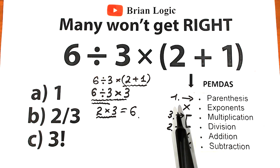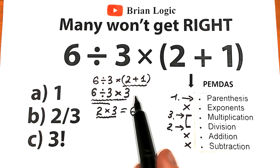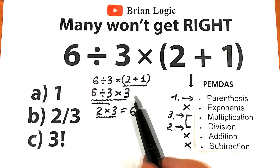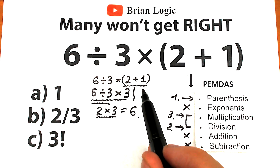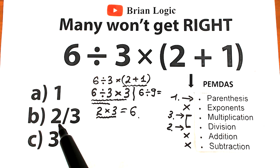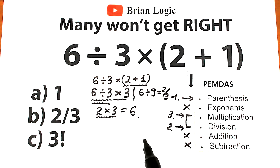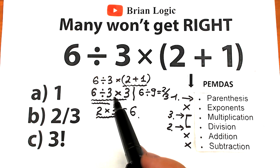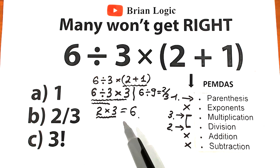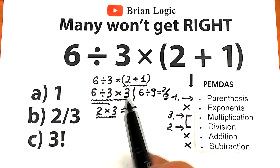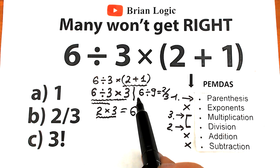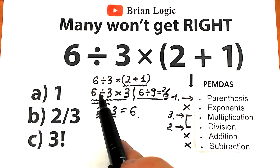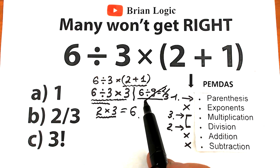A lot of students are confused because 6 is not one of the listed options. So they go back and try to multiply first: 3 times 3 gives 9, so they get 6 divided by 9, which gives 2 over 3 — and that's option B. But in terms of math, it doesn't work like that. If you want to divide by 9, you need to put brackets around 3 times 3. So 6 divided by the whole expression 3 times 3, with brackets, gives 2 thirds. But we don't have parentheses here, so forget about option 2 thirds.